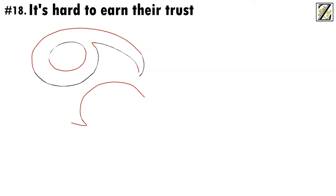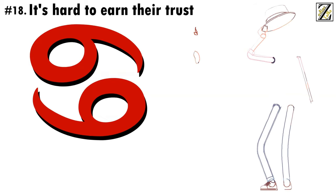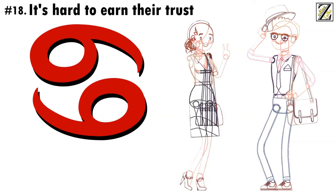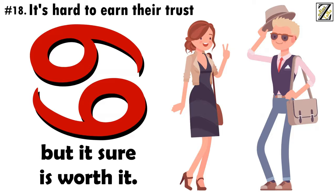Number 18. It's hard to earn their trust. While Cancers have no problem making a bunch of acquaintances, making friends is a whole other ballpark. It's not that they're bad at it, but rather that they're often suspicious of other people's intentions and tend to keep others at arm's length until they can be sure they won't be hurt. Establishing a close relationship with a Cancer isn't always easy, but it sure is worth it.